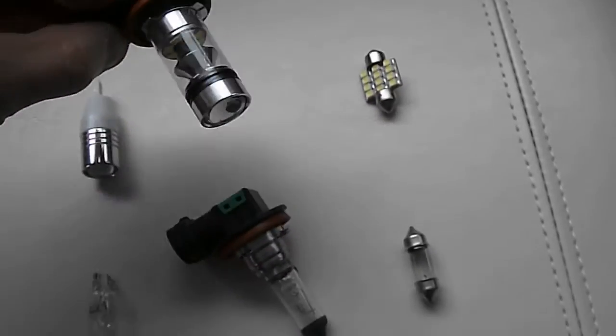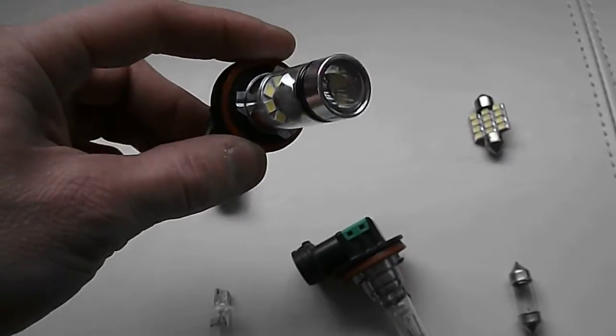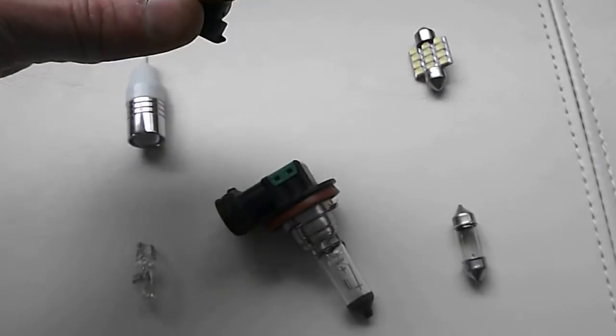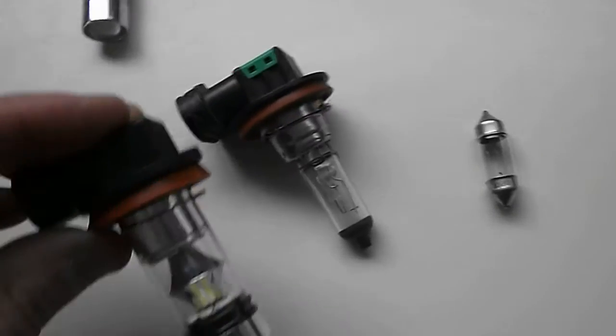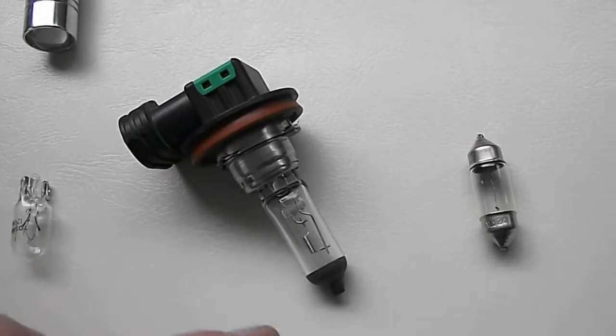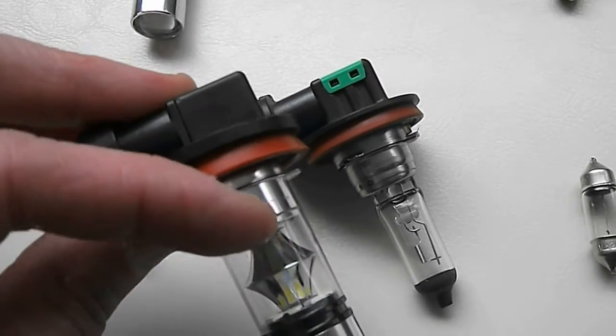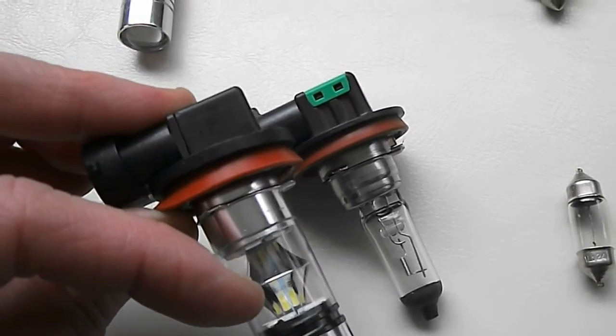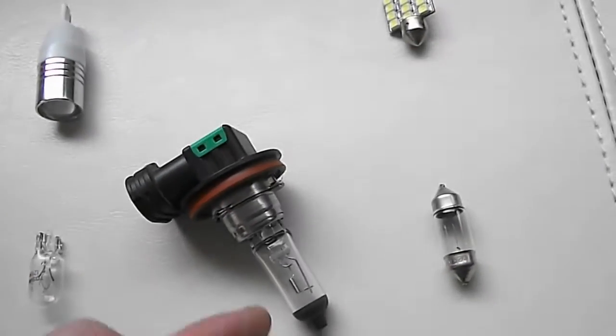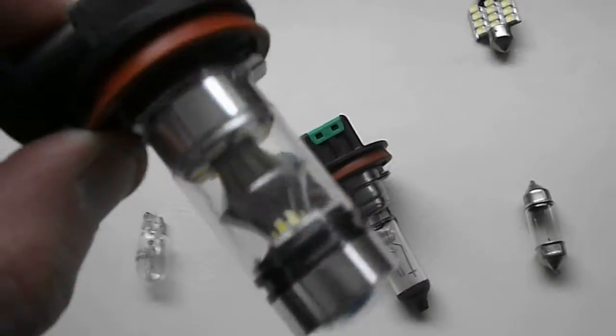It claims to be the same thing, claims to be a hundred watt fog light, 6,000 K. So the bulb temperature should match the headlights in my car. But the first thing I've noticed right here is that it does not line up. The element right here is at a different depth than the center of this right here. So I can see that's going to be a problem for sure. I highly doubt it's going to be equal to this as far as light pattern.